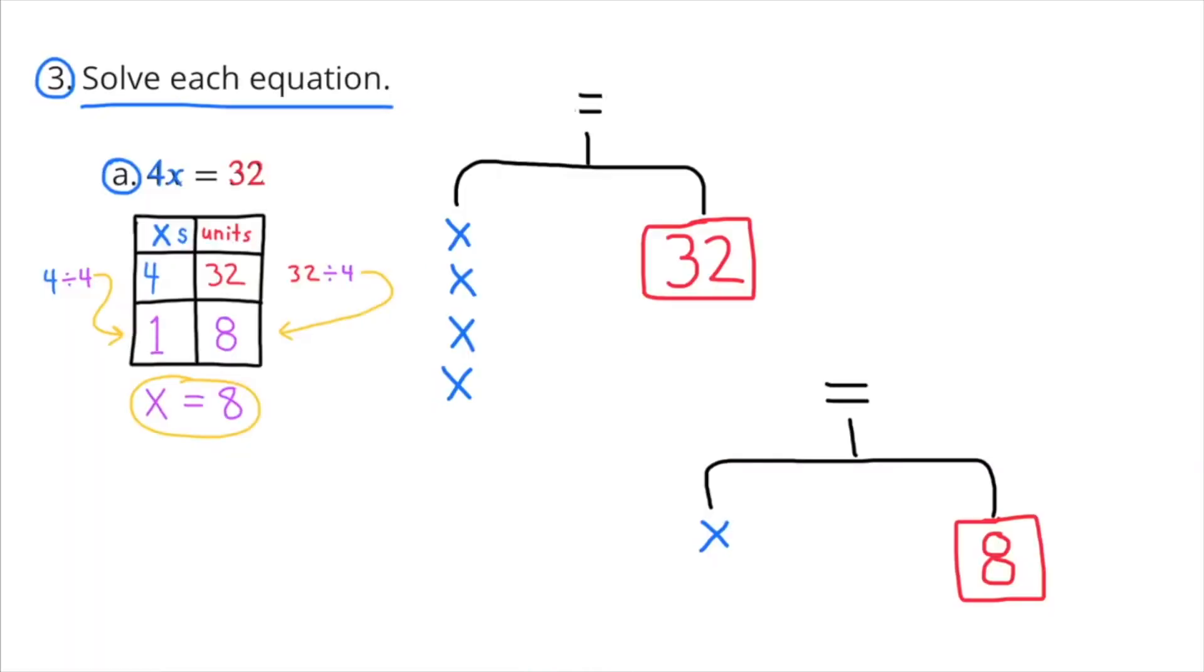Number 3: Solve each equation. A: 4x equals 32. Here's a couple illustrations to help you understand how to solve this. The first diagram is a table on the left side of the screen. The column on the left has the number of X's in it, and the column on the right has the number of units. So 4 X's equals 32 units. To figure out what 1 X is worth, I needed to divide 4 by 4. That gives me 1 X. Since I divided the number of X's by 4, I need to divide the number of units by 4. So 32 divided by 4 equals 8. So 1 X equals 8.